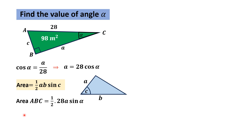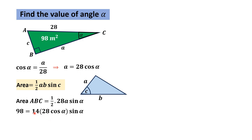So substituting: the area of triangle ABC equals one-half times 28 times a times sine(alpha). Substituting the area as 98, and a equals 28 cos(alpha), we get 98 equals 14 times 28 cos(alpha) times sine(alpha).